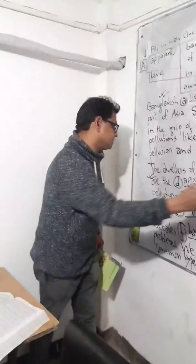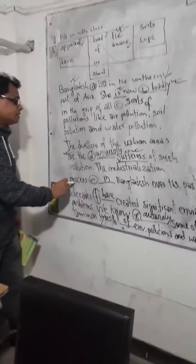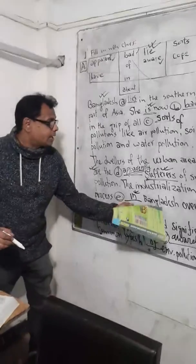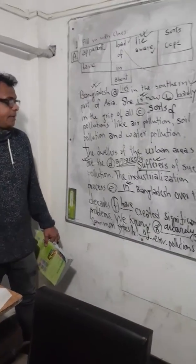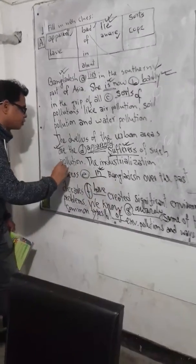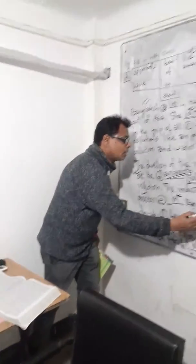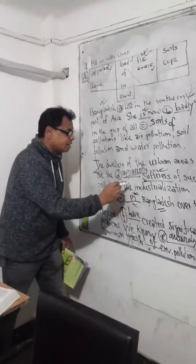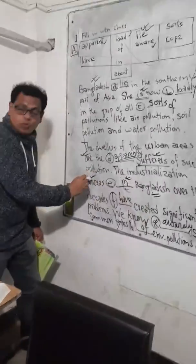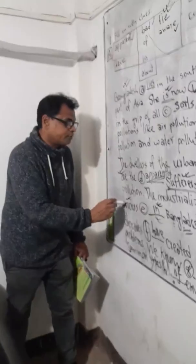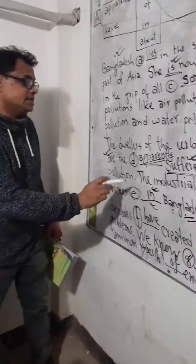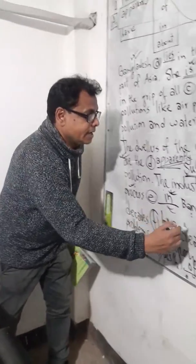They are the apparent sufferers of such pollution. Next: 'The industrialization process dash in Bangladesh.' Here we need a preposition before the noun 'Bangladesh.' A preposition is a word that relates a noun with another word in the sentence. Since Bangladesh is a place, we use the preposition 'in' — the industrialization process in Bangladesh — over the past decades.